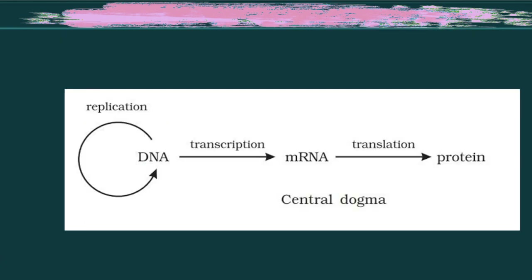Now we talk about the central dogma. When DNA replicates itself, we call that process replication. When RNA is formed from DNA, we call that process transcription. And when protein is formed from RNA, we call that process translation.